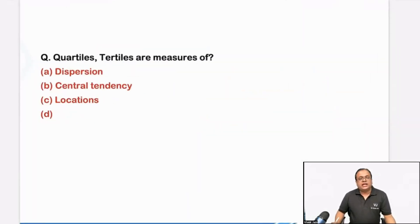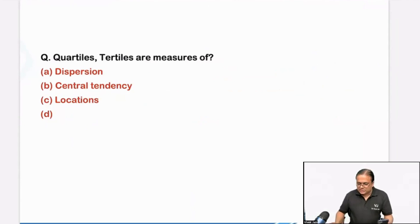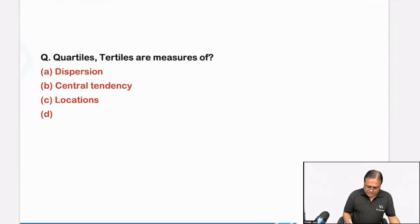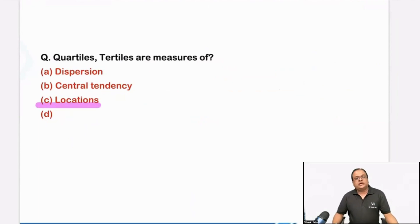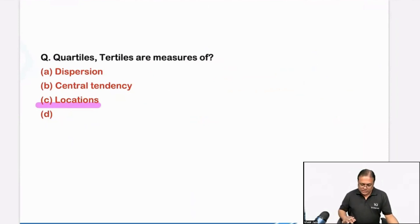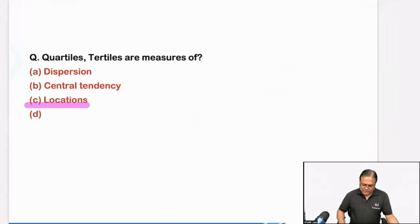Quartiles — quartiles are measures of location. This we have discussed in our mission classes, live classes, and rapid revision. It is locations. So quartiles, tertiles, pentiles, and centiles — these four examples. Let's move further.